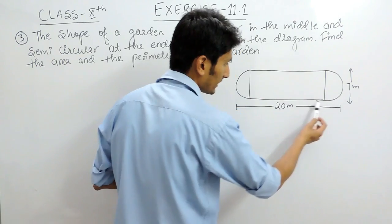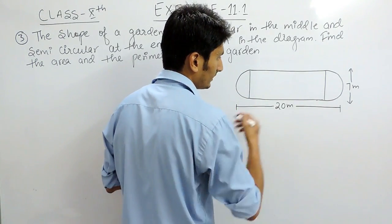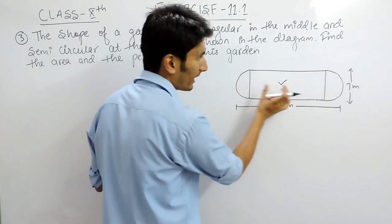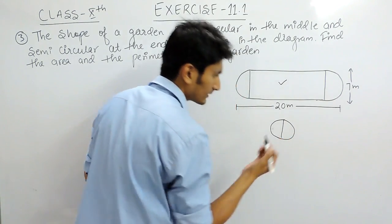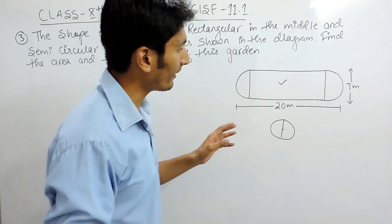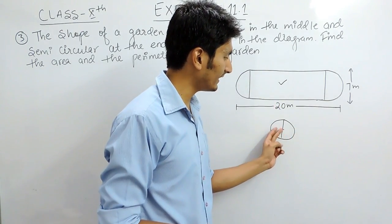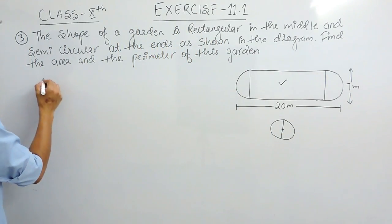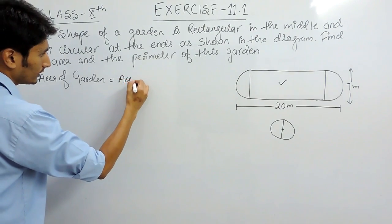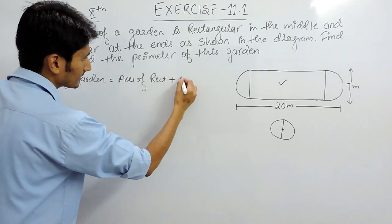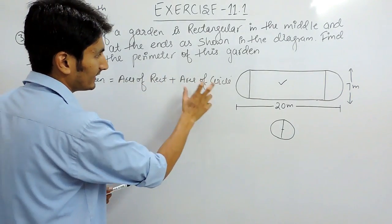If you look closely, this figure consists of two parts: one is a rectangle, and if I join this part and this part, the figure will be a circle. So if you want to find the area of this garden, you have to first find the area of this rectangle and then add the area of the circle. The total area of the garden equals the area of the rectangle plus the area of the circle.